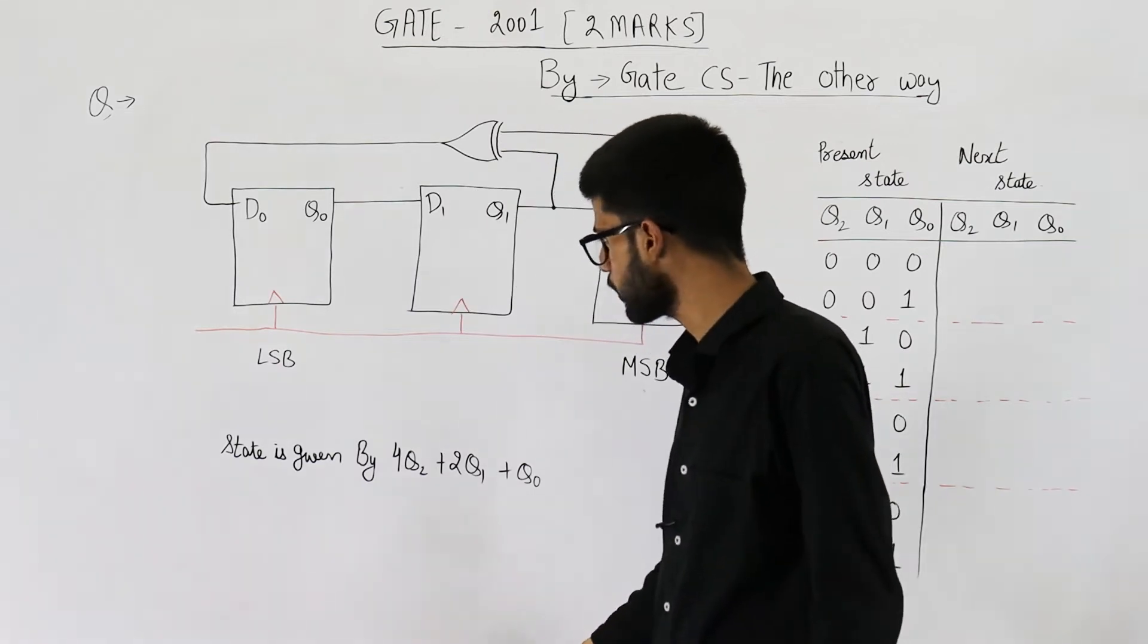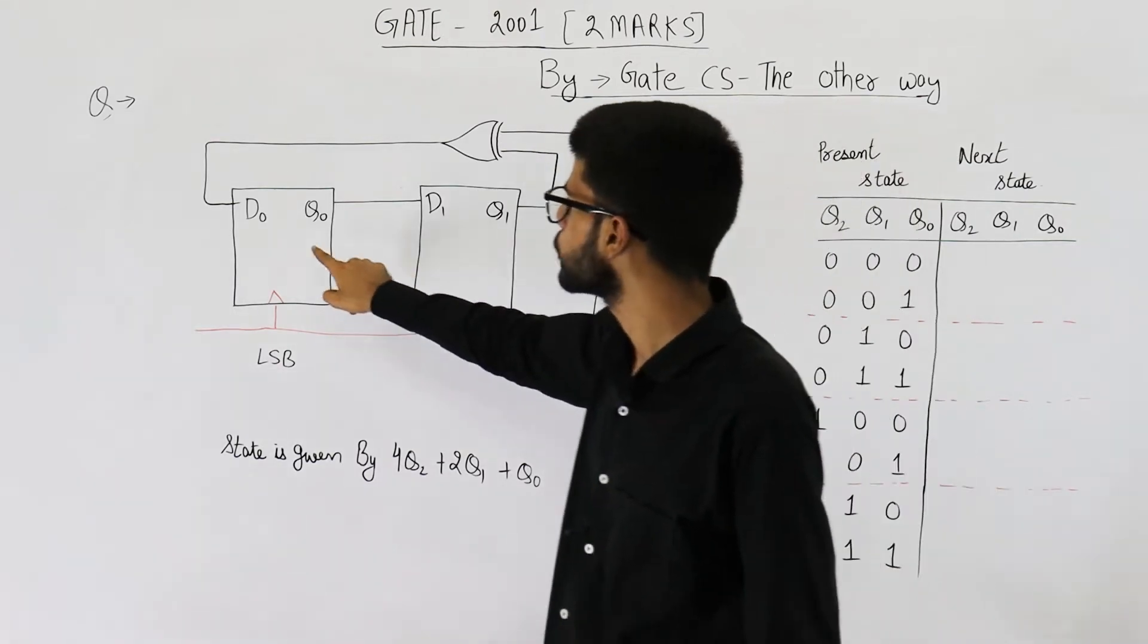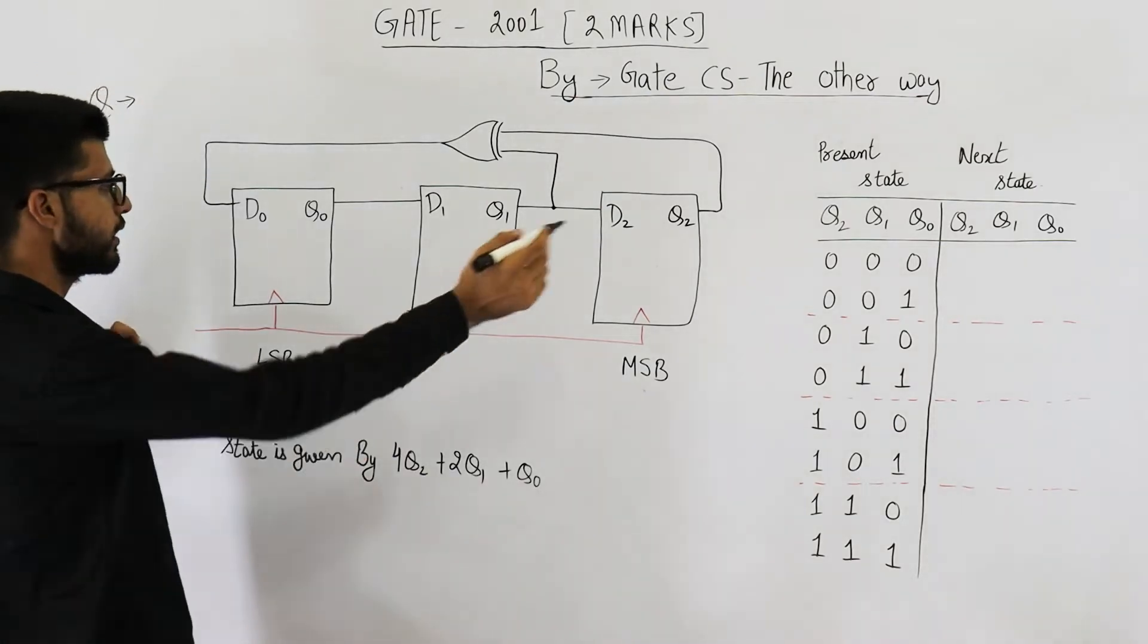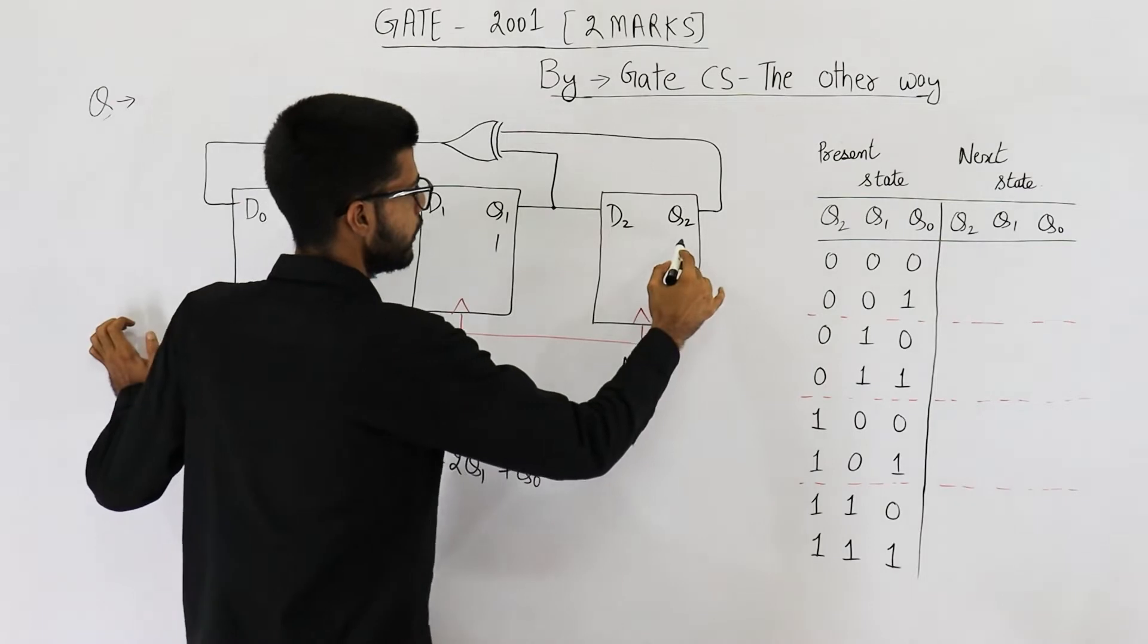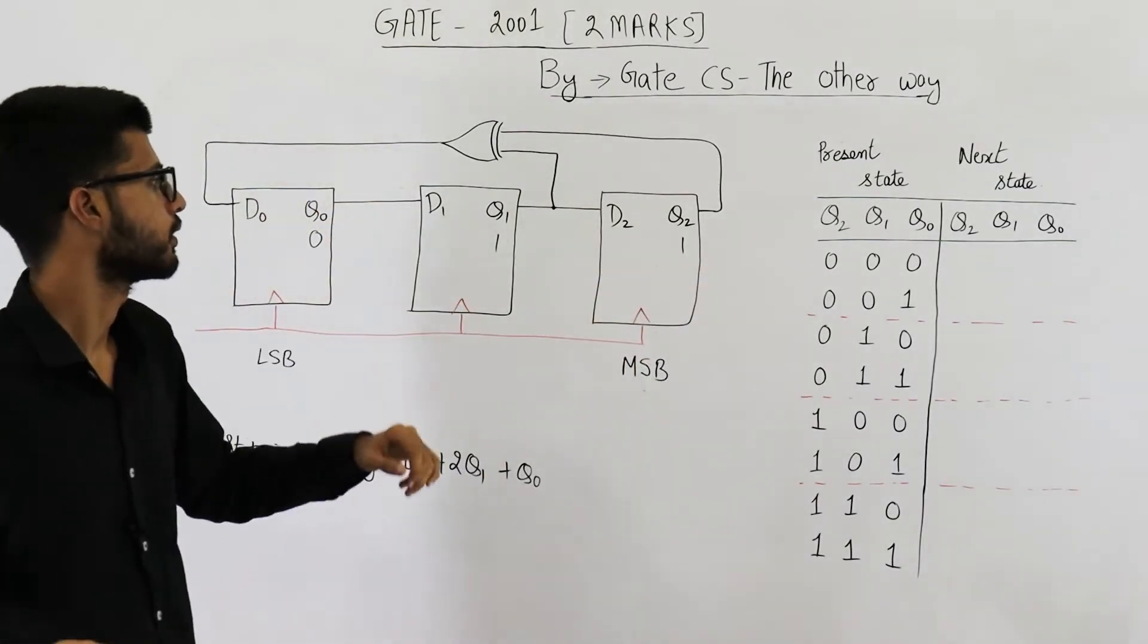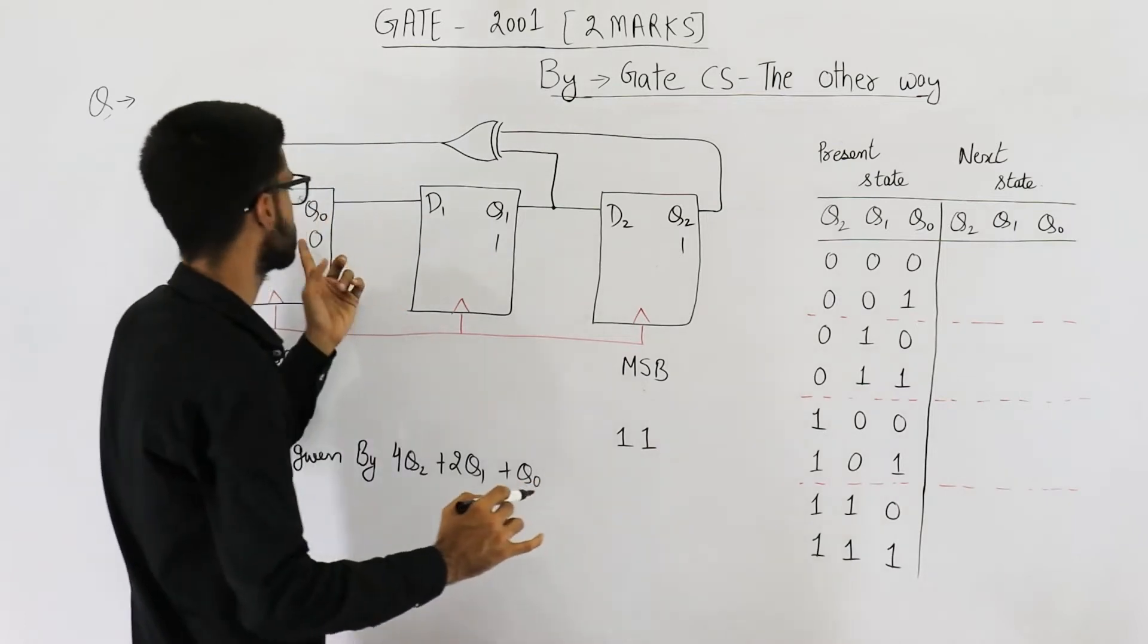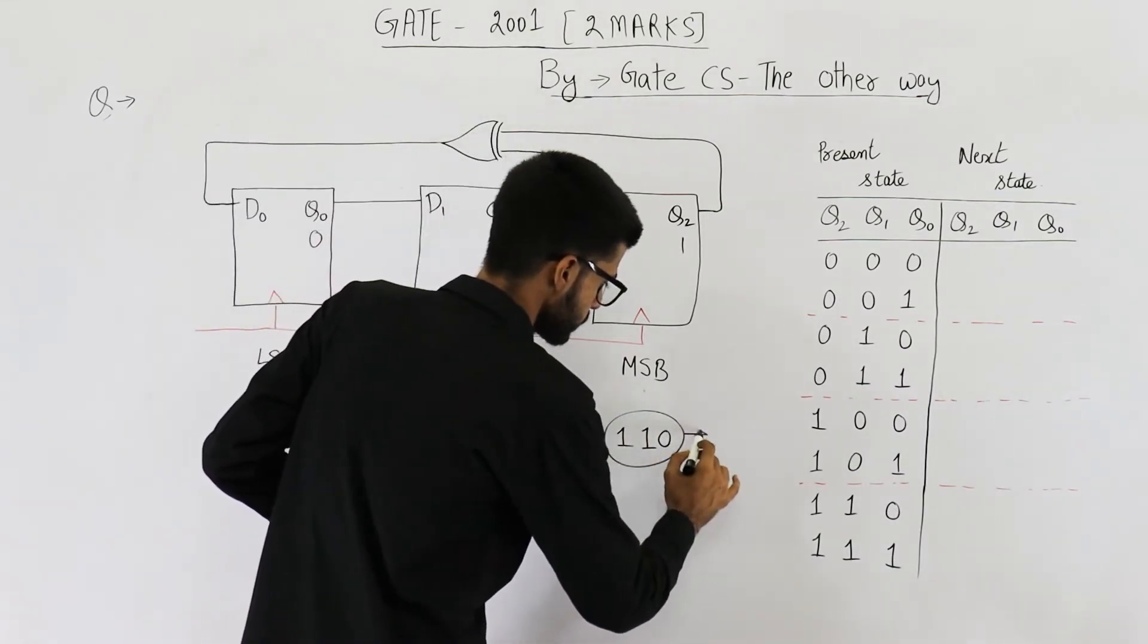Now in the diagram it's given that this bit is the MSB, and this bit q0 will be the LSB, least significant bit. That means at any given time, if the value of q0 is 0, q1 is 1 and q2 is 1, what will be the state of this counter? This one is MSB, that means start from here, most significant bit, then this one and then the least significant bit. You can see 110 means 6.